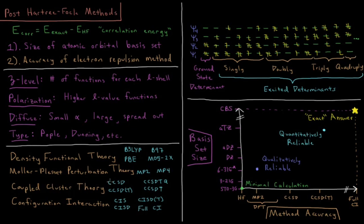So these have acronyms like coupled cluster singles and doubles, coupled cluster singles, doubles, triples, singles, doubles, and perturbative triples, singles, doubles, triples, quadruples, etc.